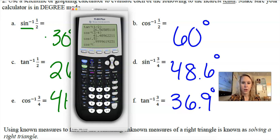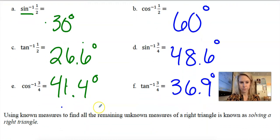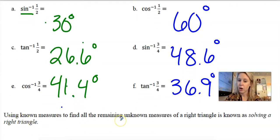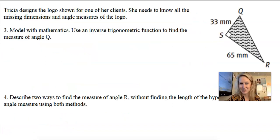Using known measures to find all remaining unknown measures is called solving a right triangle. That's what we're about to do — get ready.